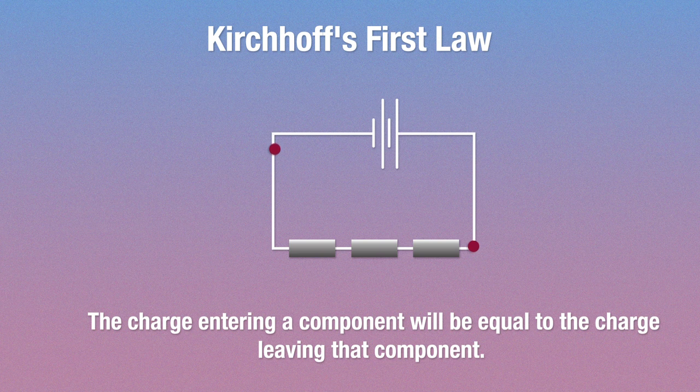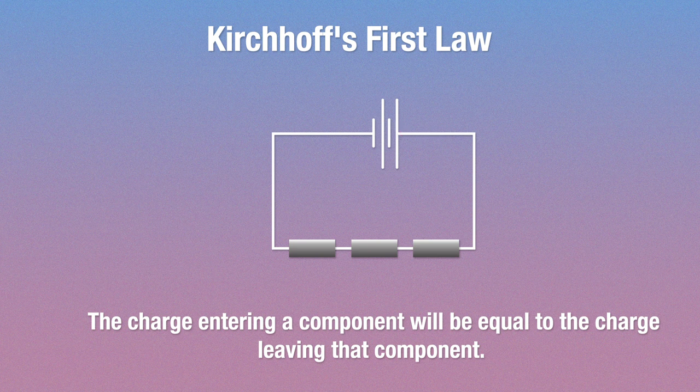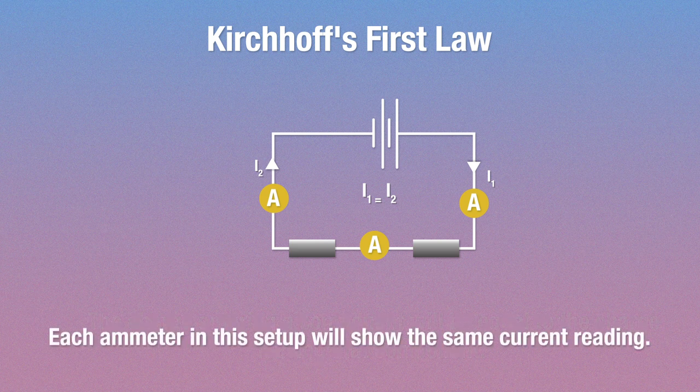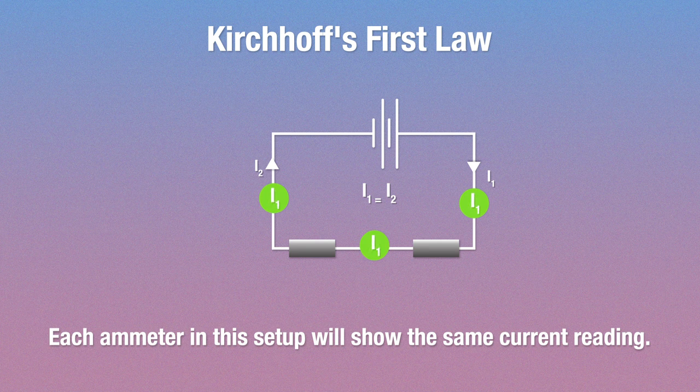And obviously we're not just going to come up with theories and not test them, right? We have to prove it. So here's what we do. We create a circuit with multiple components in series and ammeters set up at different points. As soon as the switch is closed and the current starts flowing, you'll see that the ammeters all show the same reading. So there's our proof.